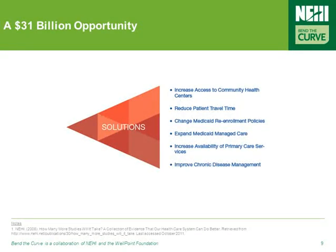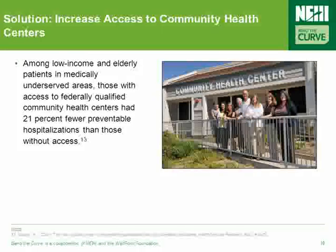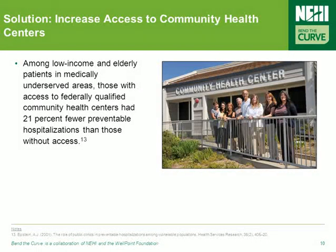Decreasing hospital admissions for ambulatory care sensitive conditions requires building on a coordinated set of proven practices in the field, coupled with policy actions in both the private and public sectors. One proven way of decreasing these hospital admissions represents a renewed emphasis on community care, as a recent study found that among low-income and elderly patients in medically underserved areas, those with access to a federally qualified community health center had 21% fewer preventable hospitalizations than those without access.